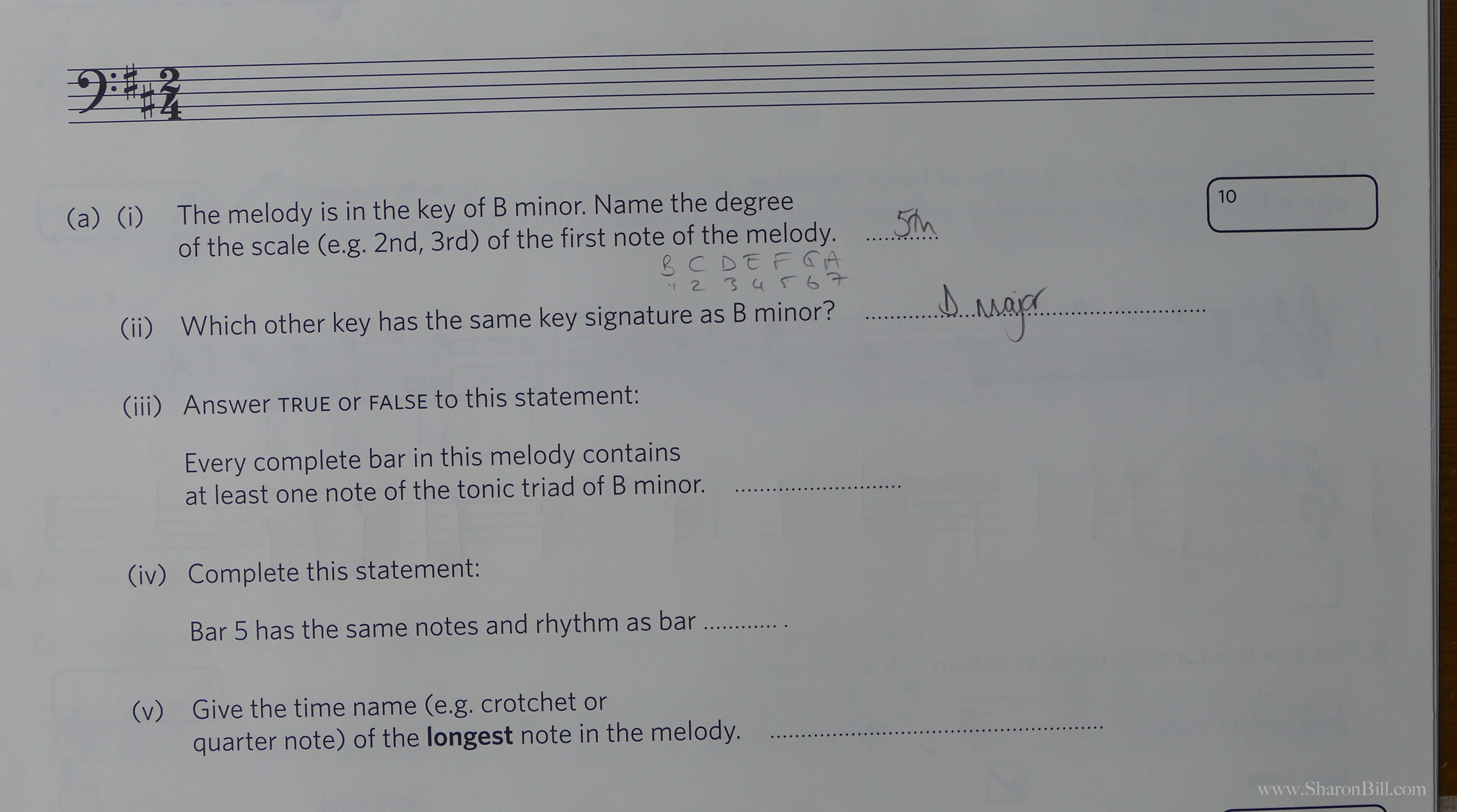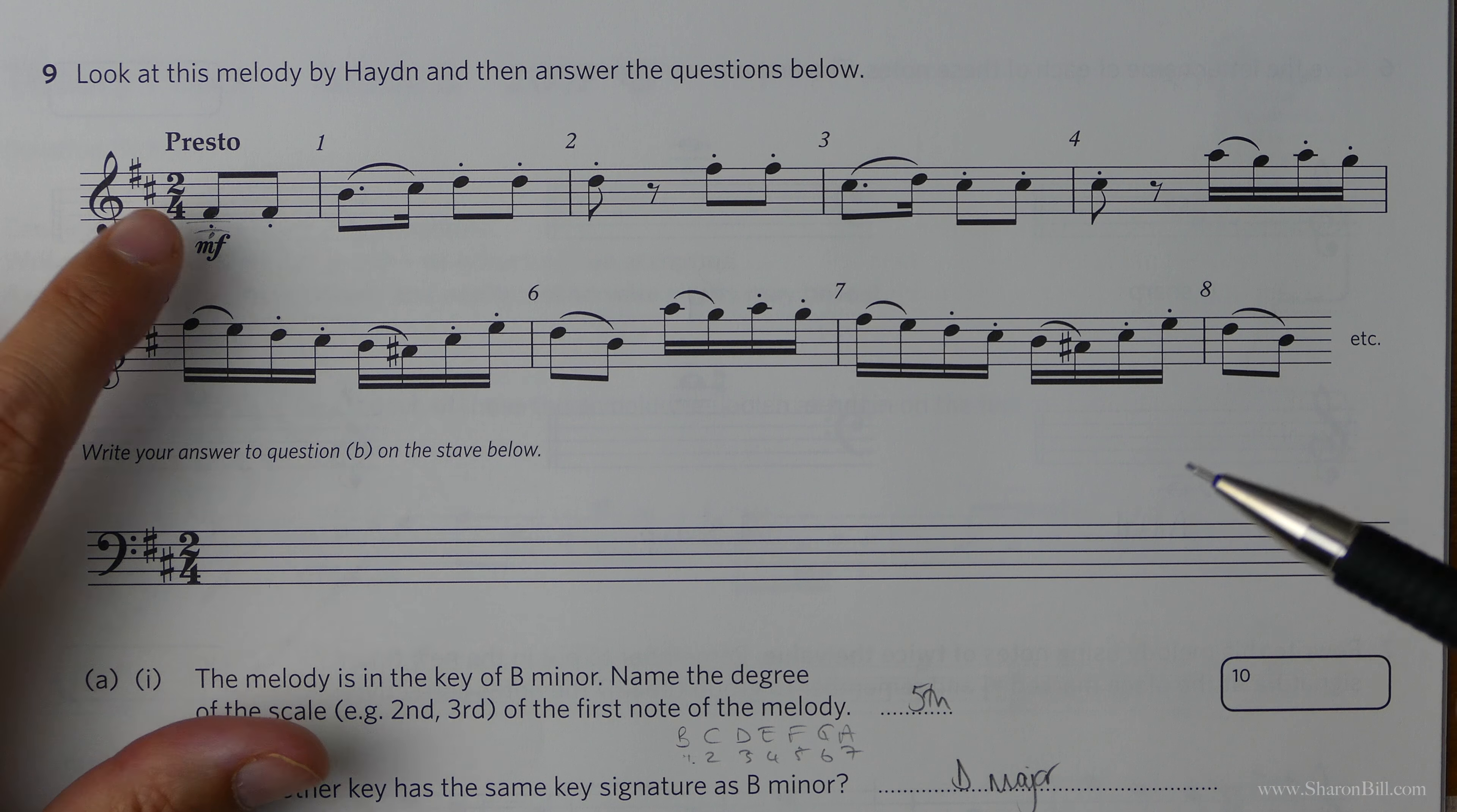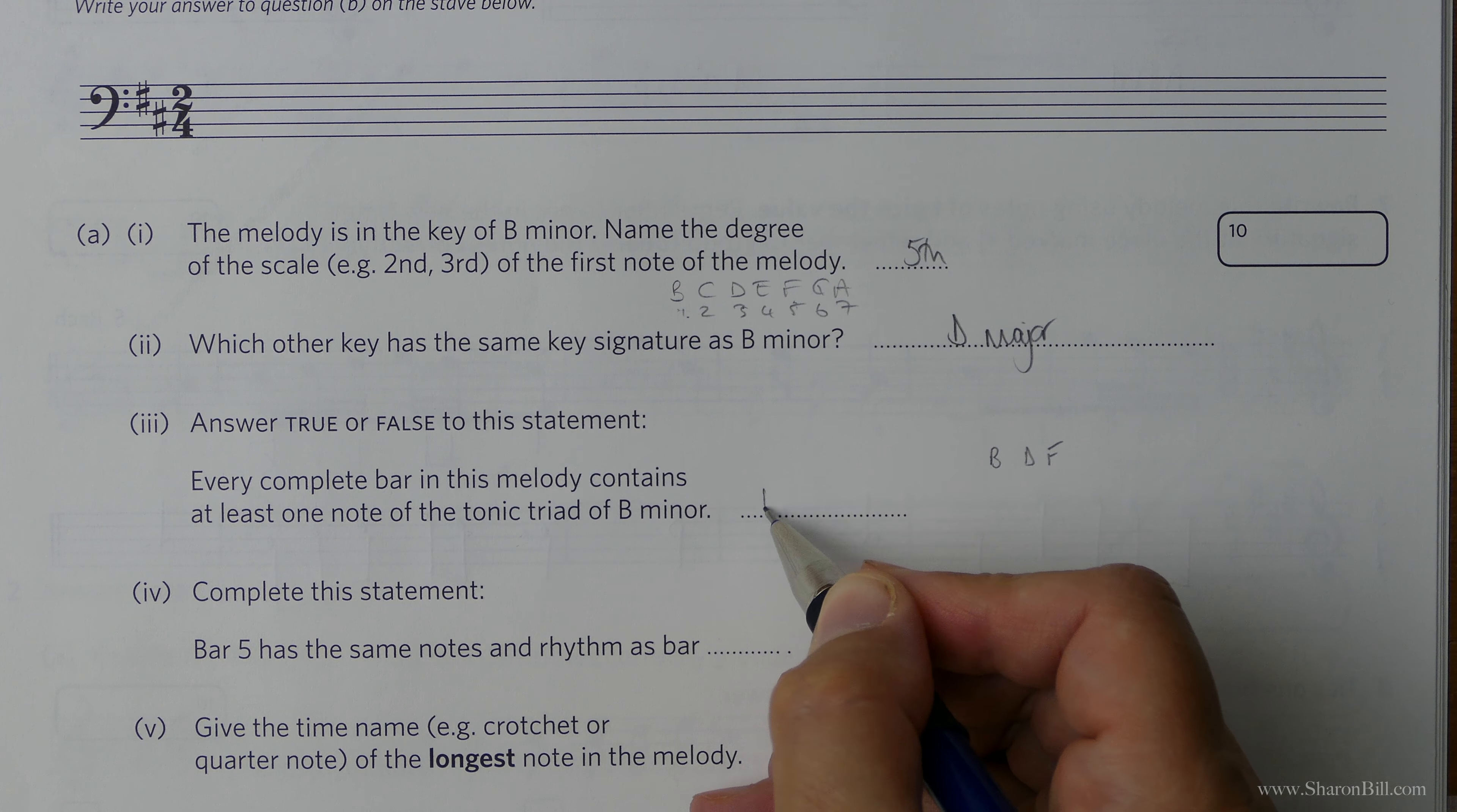Answer true or false to this statement. Every complete bar in this melody contains at least one note of the tonic triad of B minor. So B minor, the triad, is the first, the third and the fifth. So we need to make sure that there's a B, a D and an F in every bar. We've got an F here, a B, and a D. A D, F, yes. There's a D. However, here, there's a C, A, G, so no. So straight away, we can't say that every single bar has a note of the tonic triad because bar four doesn't. So false.